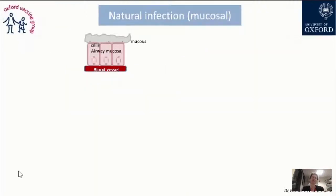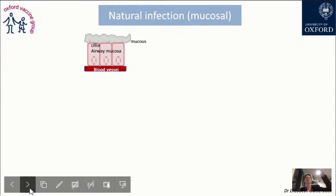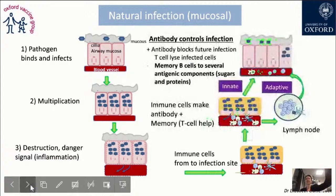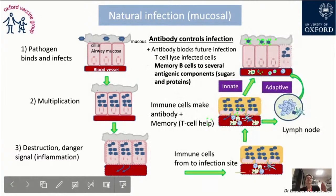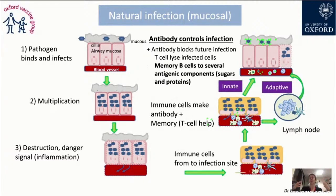When you use a platform based on genetic sequences, how do you provide the danger signal? Normally you avoid using adjuvant, and the genetic sequence itself provides a bit of the danger signal. In a natural infection, the pathogen binds and infects, for example, the mucosa, then multiplies, and tissue destruction occurs — that is the danger signal. Immune cells travel to the infection site and to the lymph nodes, raising antibodies to control and block future infection, T cells to lyse infected cells, and memory B cells for future encounters.